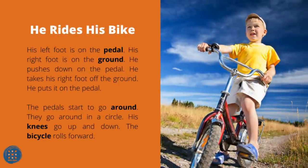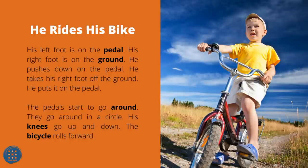He Rides His Bike. He rides his bike. His left foot is on the pedal, his right foot is on the ground. He pushes down on the pedal. He takes his right foot off the ground and puts it on the pedal. The pedals start to go around in a circle. His knees go up and down. The bicycle rolls forward.